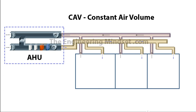This CAV design works very well if all the rooms are of a similar condition or require a similar cooling load. But if one room has a different cooling load, you're going to have to connect it to a different AHU — maybe a separate one just for that room. And this is one of the key limitations of the CAV system.